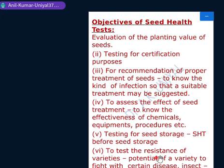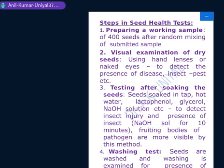Another objective is to test the resistance of varieties. Some varieties may be insect pest or fungal resistant, or have the potential to fight certain diseases or insects. Now, what are the procedures of seed health tests? The first procedure is to prepare a working sample.